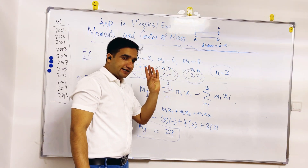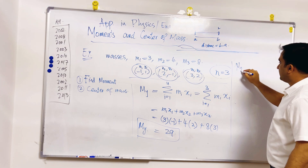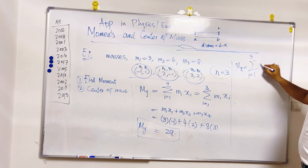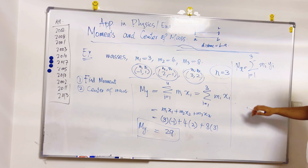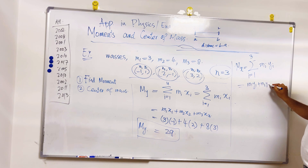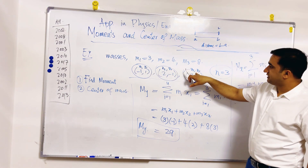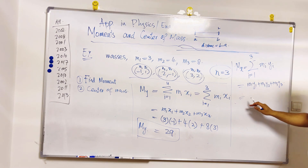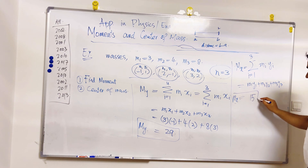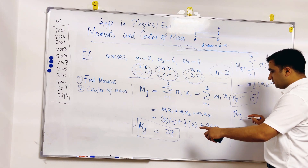Similarly, to calculate Mx I use the formula Σ from i=1 to 3 of m_i·y_i, which gives m1·y1 + m2·y2 + m3·y3. Plugging in y1 = 1, y2 = −1, y3 = 2 with m1 = 3, m2 = 4, m3 = 8, the final answer is Mx = 15.